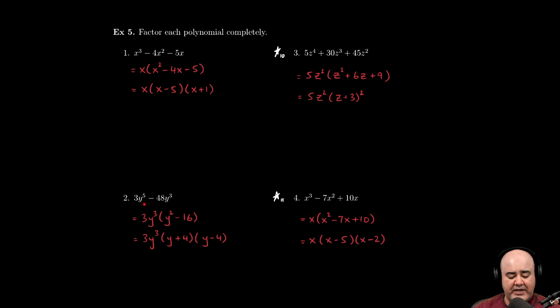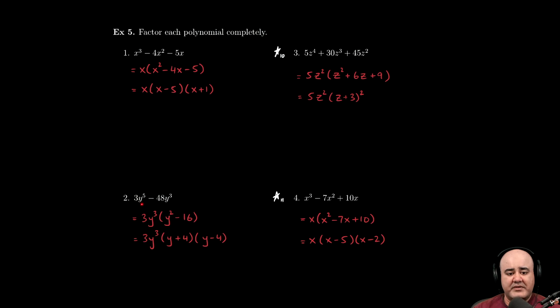The next one is 3y to the fifth minus 48y to the third. The GCF here is 3y to the third—there's a 3 that goes into 3 and into 48, and y cubed can be factored out of both y to the fifth and y cubed. I open parentheses immediately after writing the GCF. How do I know what goes inside? I divide the terms by the GCF. So 3y to the fifth divided by 3y cubed will give us y squared. Negative 48y to the third divided by 3y to the third will give us negative 16—the y cubes will cancel each other out.